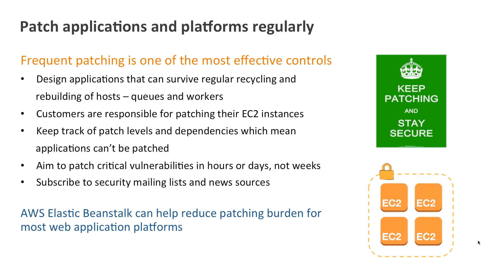Amazon Elastic Beanstalk is our platform service where you just have to deploy your code — .NET, Java, and many other platforms — where Amazon pre-configures the platform and you just give it your code. That can help with your patching enormously, so you can always keep it up to date and all you have to worry about is deploying the latest version of your application.